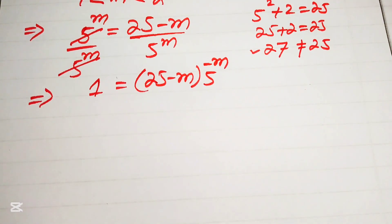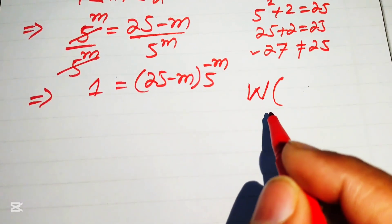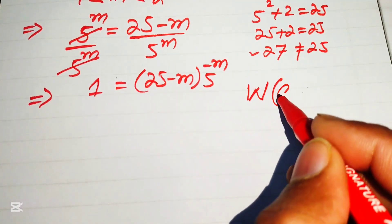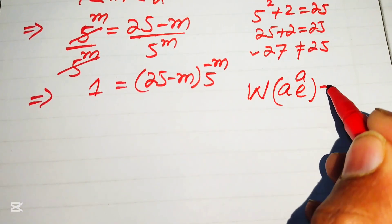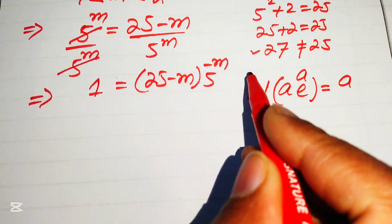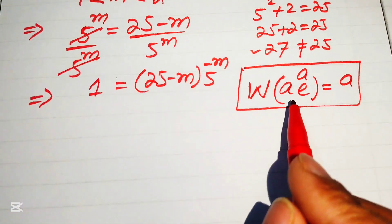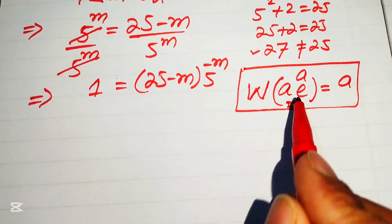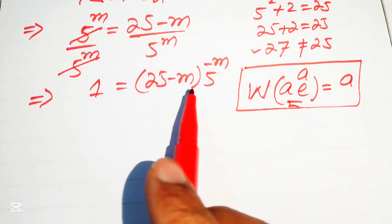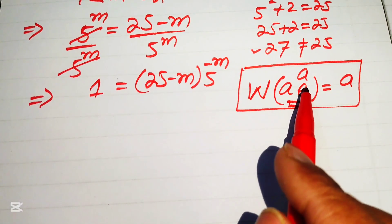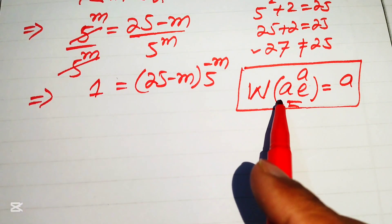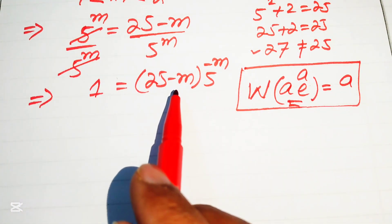To solve this, we apply the Lambert W function. The Lambert W function is defined as: W of (a times e to the power of a) equals a. So the output of W(a·eᵃ) is simply a. In order to apply this, we first need to make the right-hand side into that form, starting by expressing the exponential with base e.